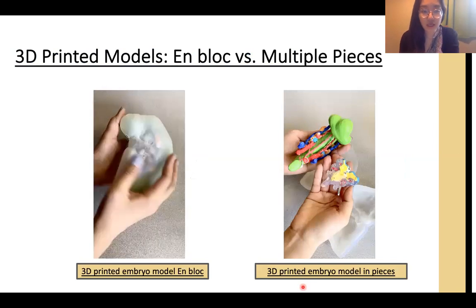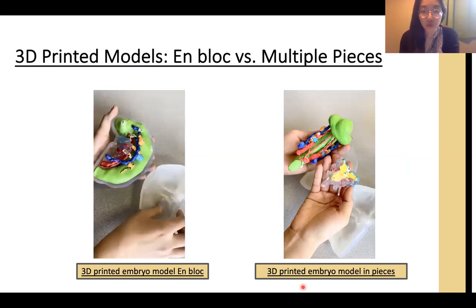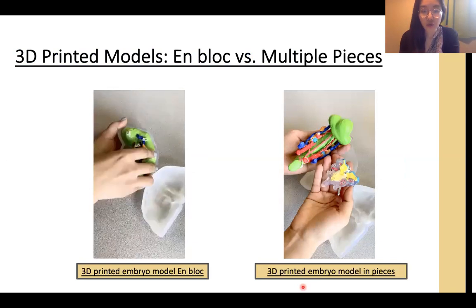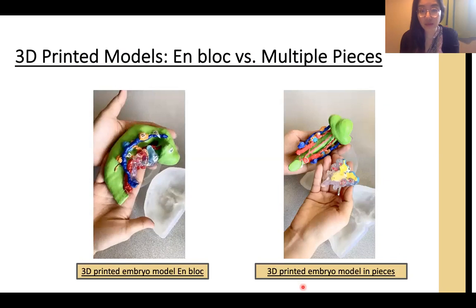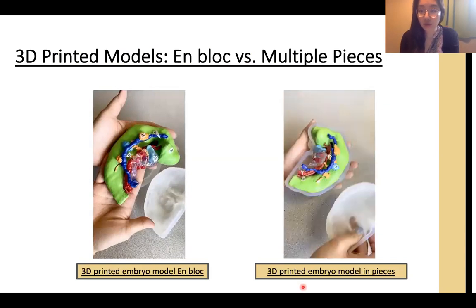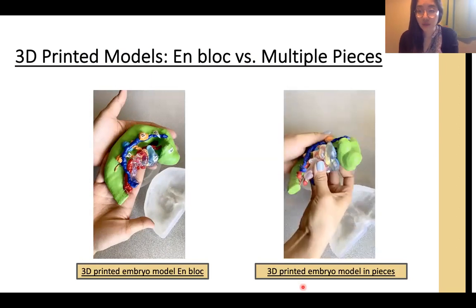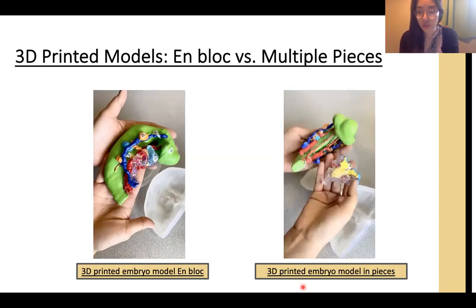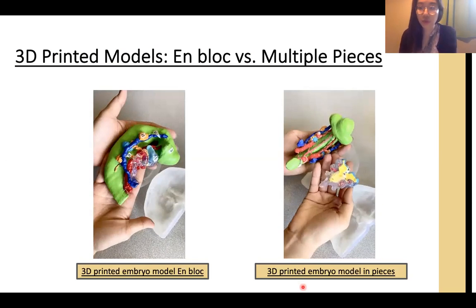On the left side is the 3D printed embryo model in a single block — all the internal structures are intact in a solid single piece. On the right side is the modular 3D printed embryo model, where the pharyngeal apparatus is detachable. It's not many pieces, but it still gives visual access to certain internal structures.